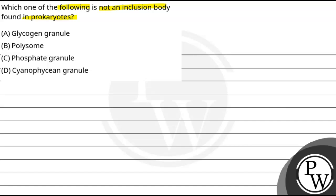In the prokaryotes, we will tell you which one of the options is not among the options. What are the options? They are A glycogen granule, B polysome, C phosphate granule, D cyanophycin granule.